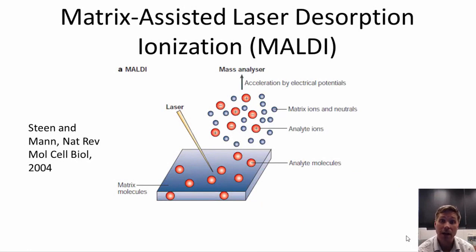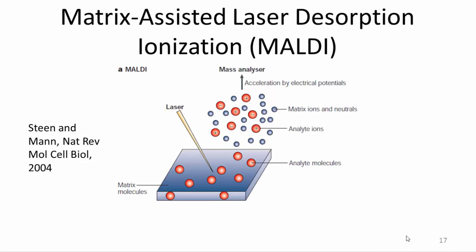Another commonly used ionization method is MALDI — matrix-assisted laser desorption ionization — where you embed your peptides in a matrix that transfers charge to the peptides when a laser is shined on the sample. You place your sample on a target, shine the laser on it, and a potential between the target and the mass analyzer causes charges to transfer to the peptides. The peptides become ions and travel into the mass analyzer for further analysis due to the applied voltage.